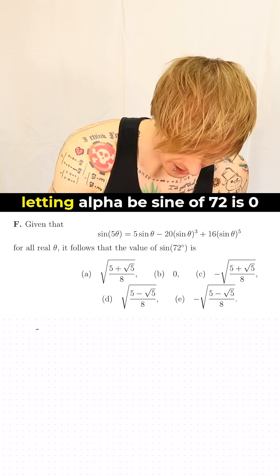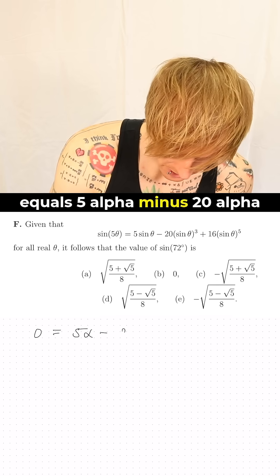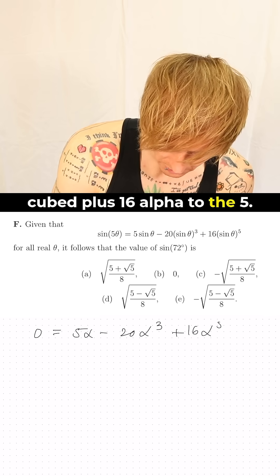So what we've got, letting alpha be sine of 72, is zero equals 5 alpha minus 20 alpha cubed plus 16 alpha to the 5.